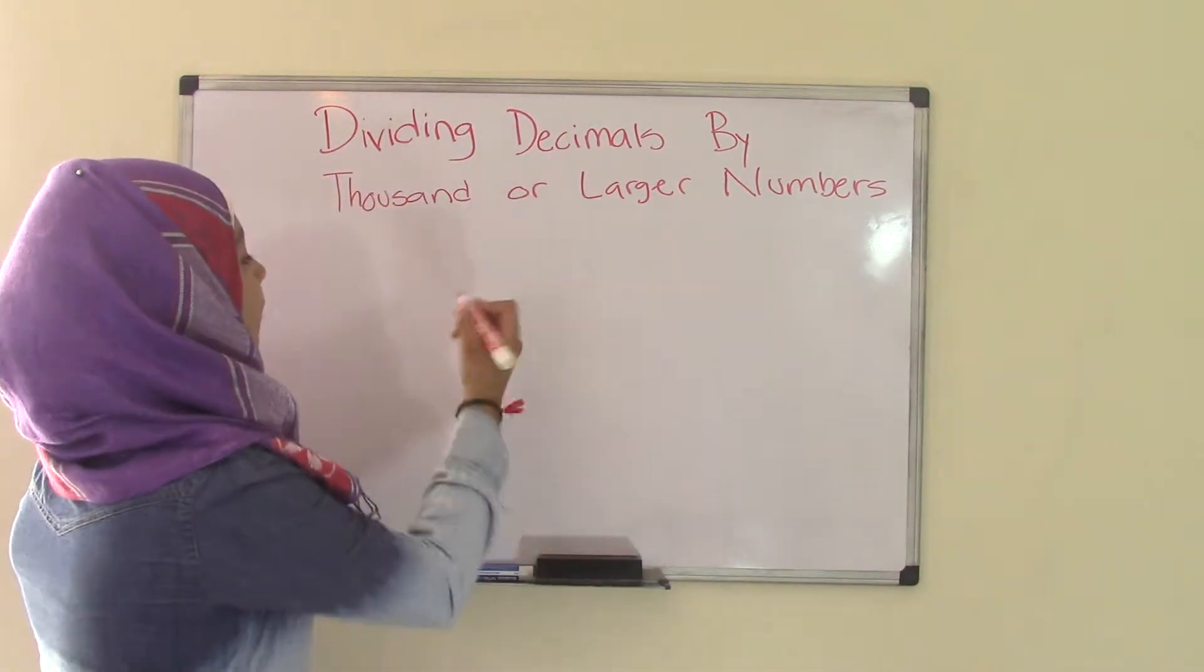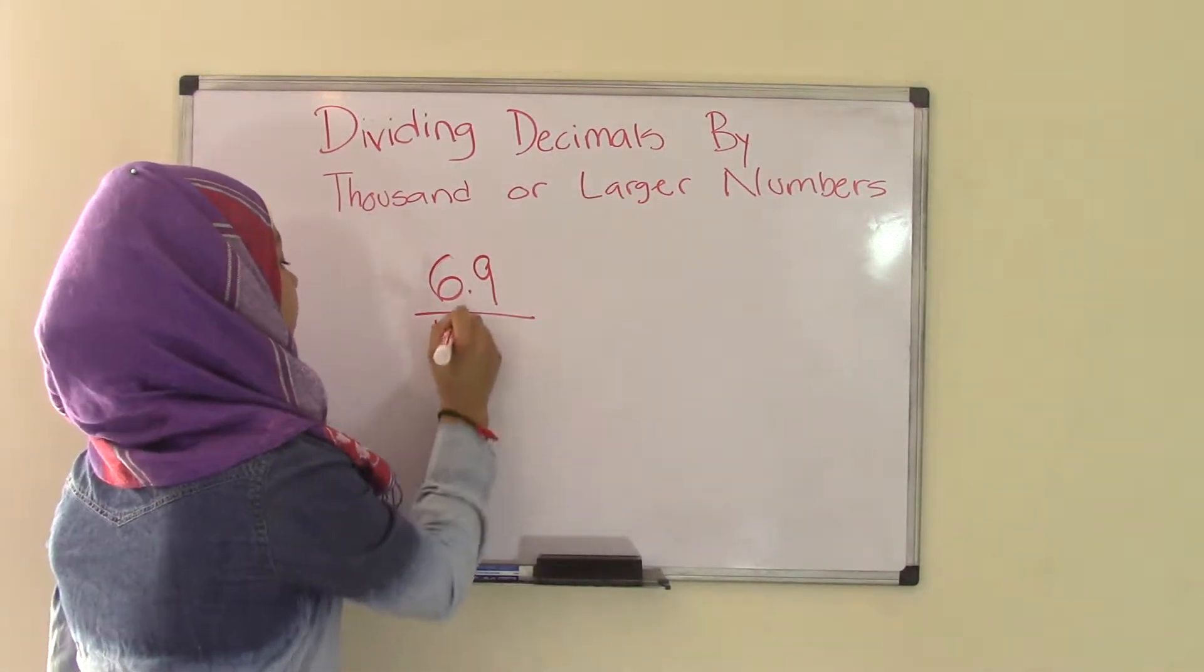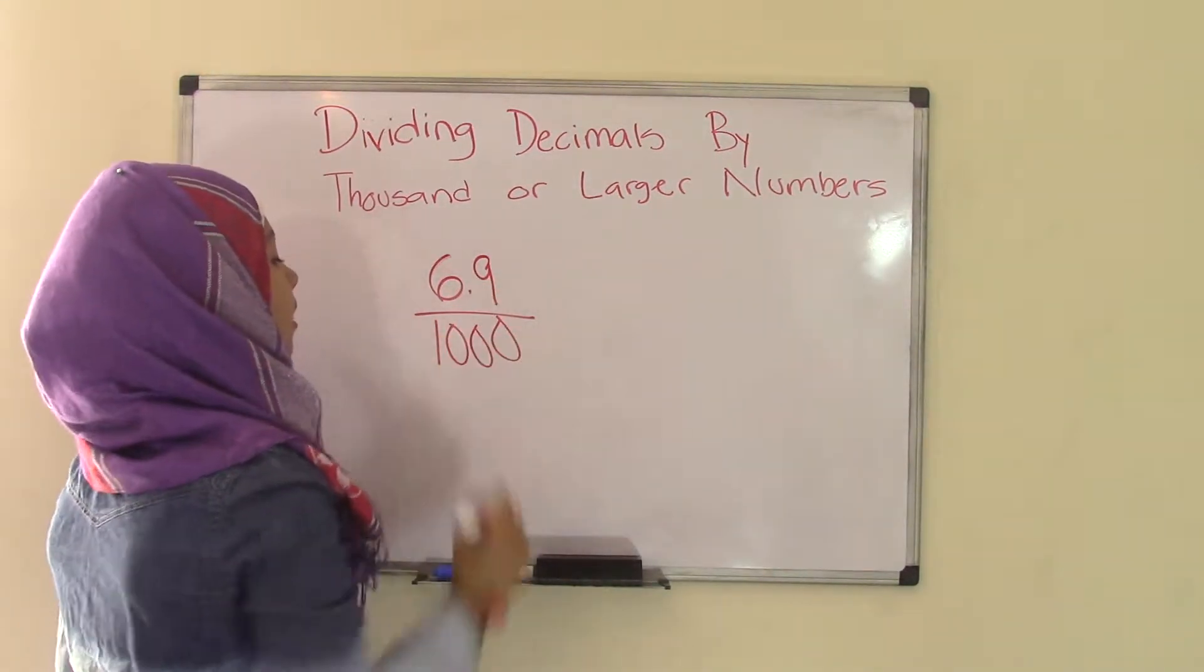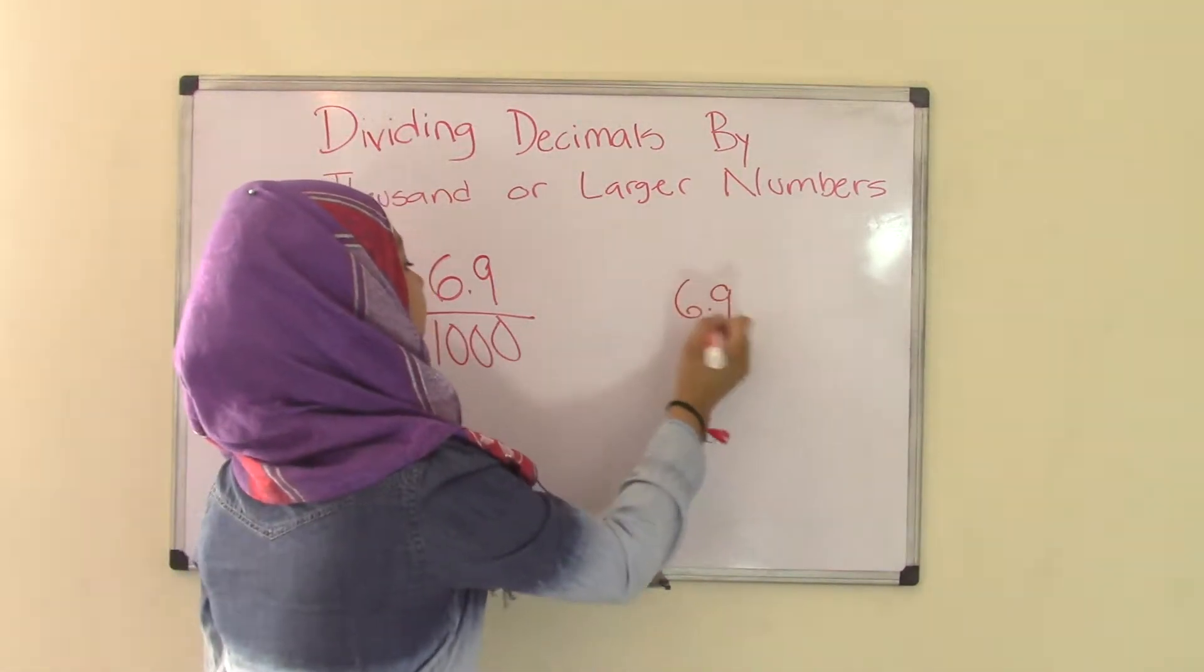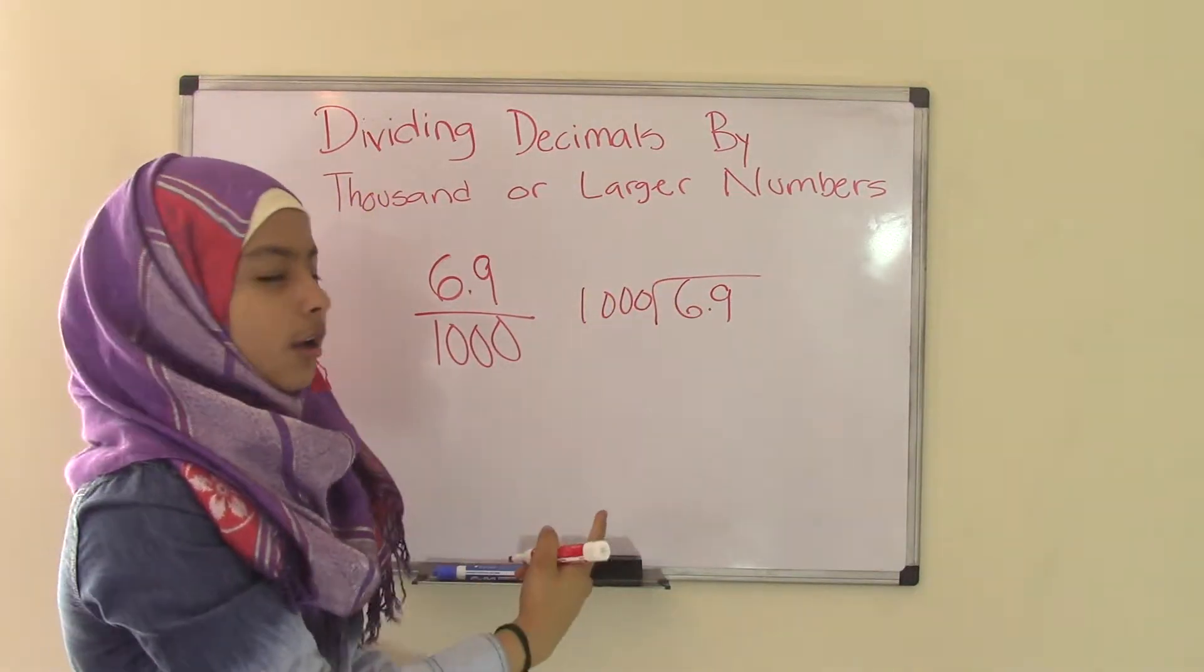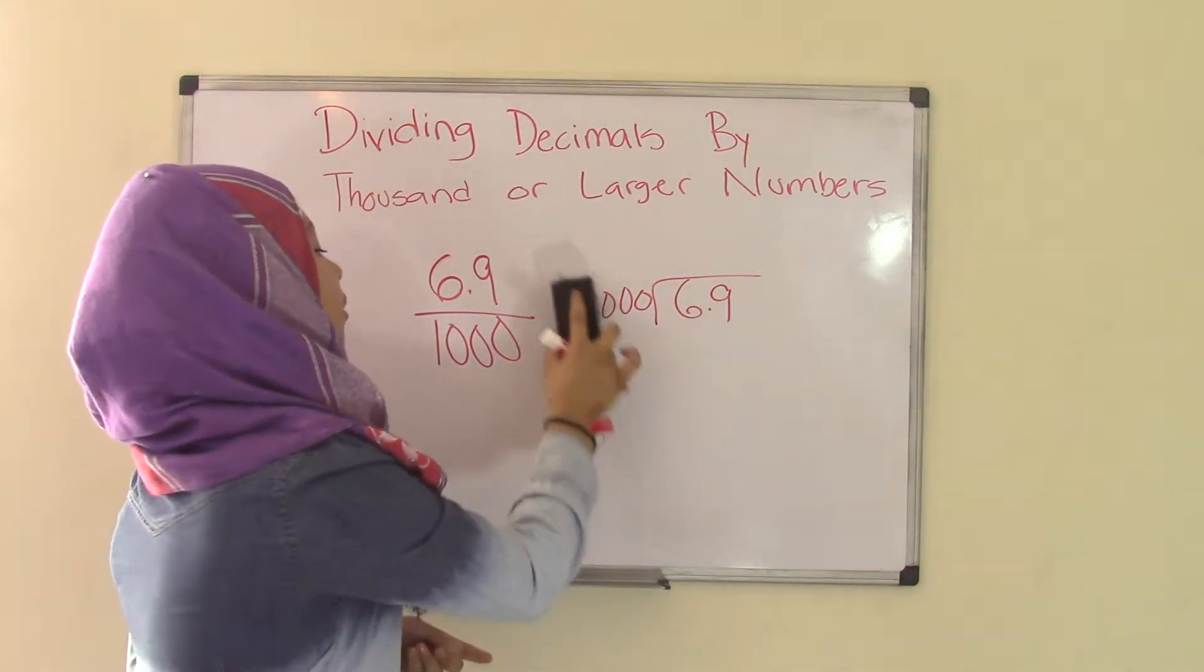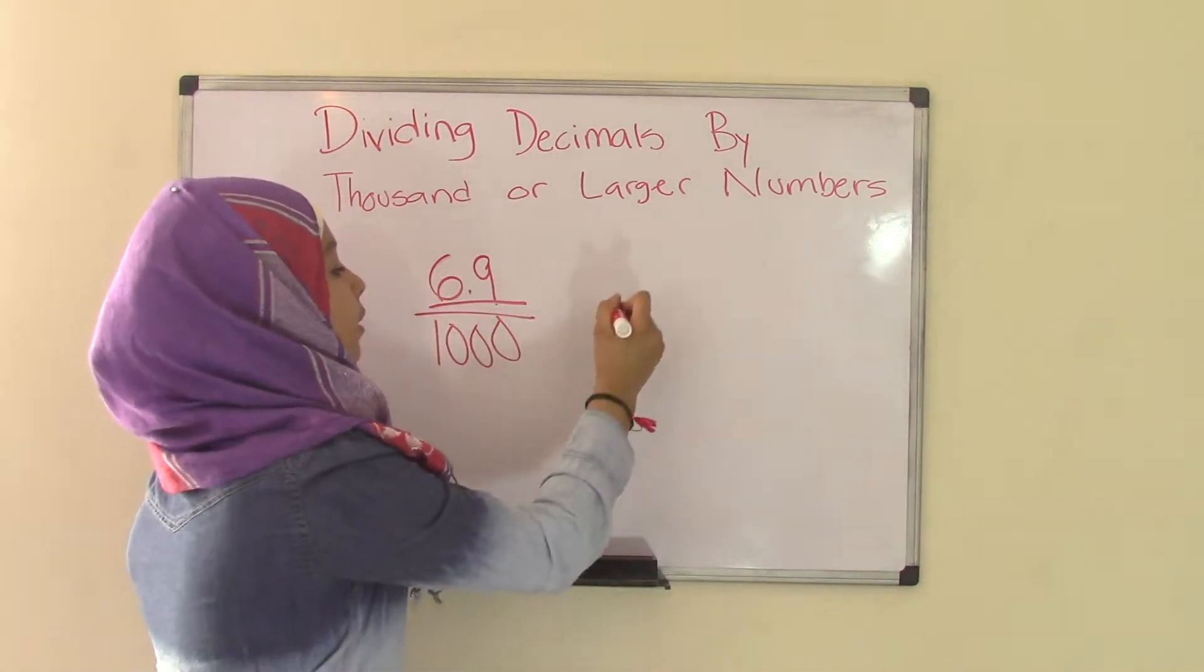Let's say we have a problem such as 6.9 divided by one thousand. Now we could just take this, write it down like that and divide. But don't you think that would take way longer? How about we just look at the decimal number which is 6.9, write it here.